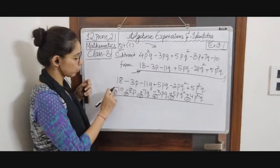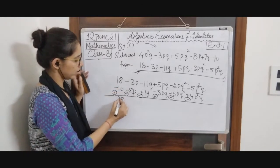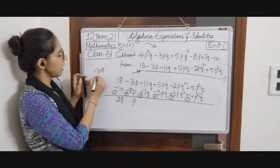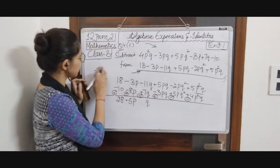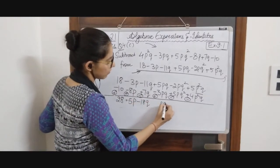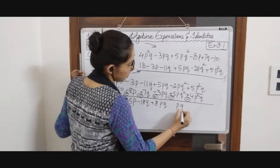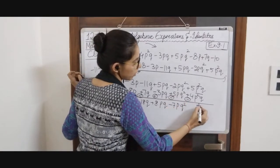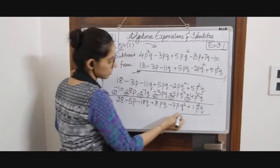Starting the calculation: 18 plus 10 is 28. For p: minus 3 plus 8 is plus 5p. For q: minus 11 minus 7 is minus 18q. For pq: 5 plus 3 is 8pq. For pq²: minus 2 minus 5 is minus 7pq². For p²q: 5 minus 4 is 1p²q. So this is your answer. With this we have completed exercise 9.1.